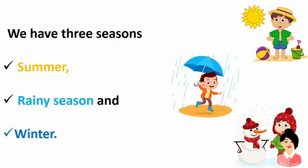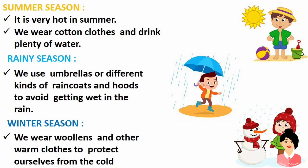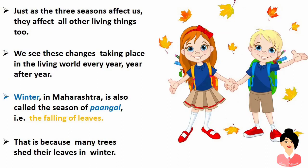My dear children, in the first poem Rain in the Night, I explained about the five seasons. In this chapter, we will only focus on the main three seasons — summer, rainy, and winter. In summer, it is very hot and we wear cotton clothes and drink plenty of water. In the rainy season, we use umbrellas or raincoats and hoods to avoid getting wet. In winter, we wear woolen and other warm clothes to protect ourselves from the cold. Just as the three seasons affect us, they affect all other living things too. We see these changes taking place in the living world every year.